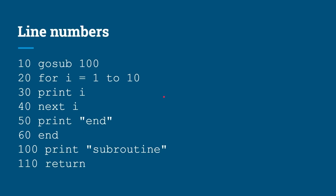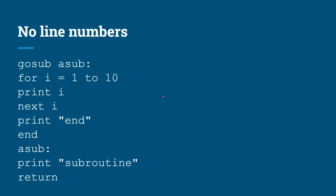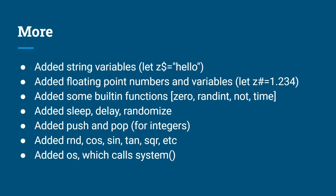Line numbers really aren't something we use today, so the first task I gave myself was to get rid of them. Here is the same program running under my version without line numbers — now you have labels. You say GOSUB asub, and asub is defined as a label down in the code. PRINT "subroutine", RETURN, then the FOR loop PRINT I, NEXT I, PRINT "end", END — all the same logic but no line numbers, producing the same output. It's much easier to edit BASIC code without line number worries.